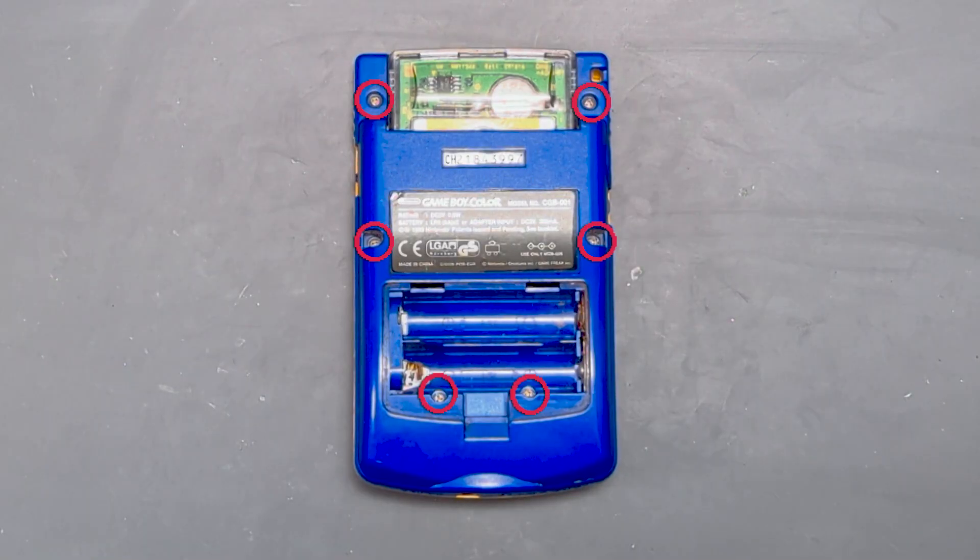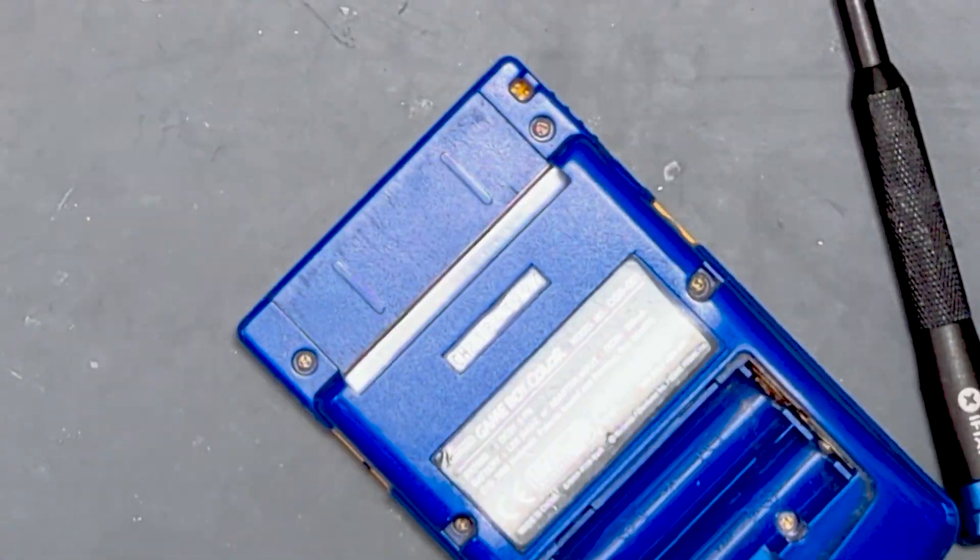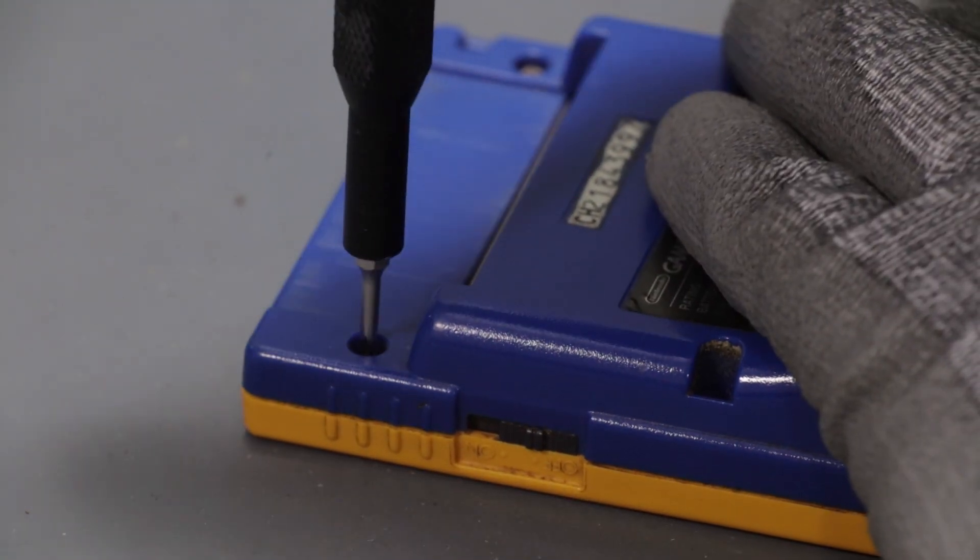I'll start by removing the six tri-wing screws located on the back of the Game Boy. Really I got to start with removing the game. Now I can remove the tri-wing screws.